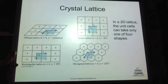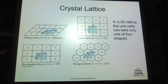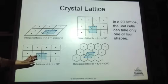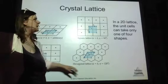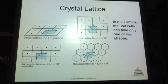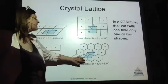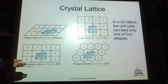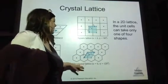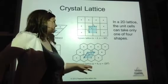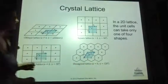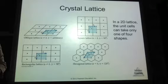In a rectangular lattice, the third type, A and B are two different lengths but they're still separated by 90 degrees — still perpendicular to one another, however their lengths are not equal. And then finally, in the fourth shape, we have the hexagonal lattice. In a hexagonal lattice, A and B are equal in length, but the difference between hexagonal and square is that square has 90 degrees separation between A and B, and hexagonal has 120 degrees separation.